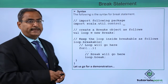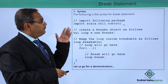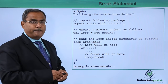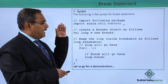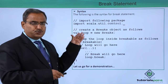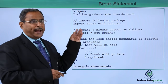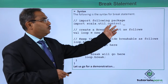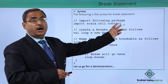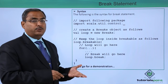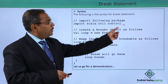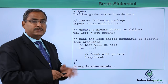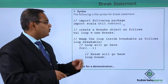Now let us show you the syntax for the break statement. First, we are supposed to import this package: import scala.util.control._ (underscore). In the case of Java, we usually write this as .* (asterisk), but here we write it as ._ (underscore).